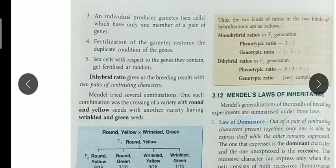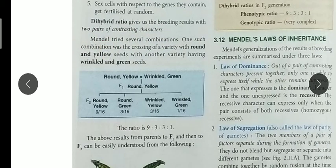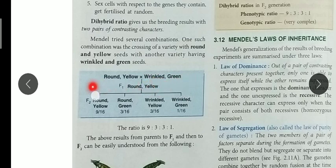Next is dihybrid cross. 'Di' means two, so here we do hybridization with two pairs of contrasting characters. Mendel tried several combinations based on seven characters. In this case, he took round and yellow seed as one combination, and wrinkled and green seed as another. So there are two characters: shape — round or wrinkled — and color — yellow or green. In F1 generation, round and yellow is dominant, so all four will be round and yellow in F1.